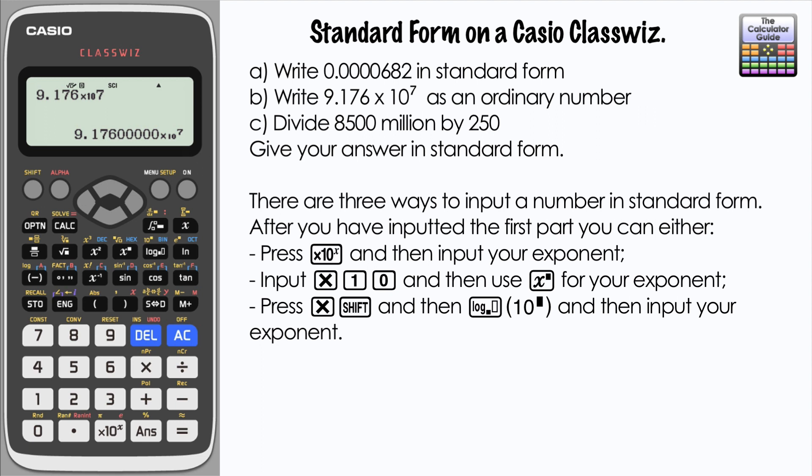If you don't like using the times 10 to the X button, you can input it and basically write it out. So 9.176 times 10 and then use your general power button, your general index button, to input the 7. That will give you the same result.